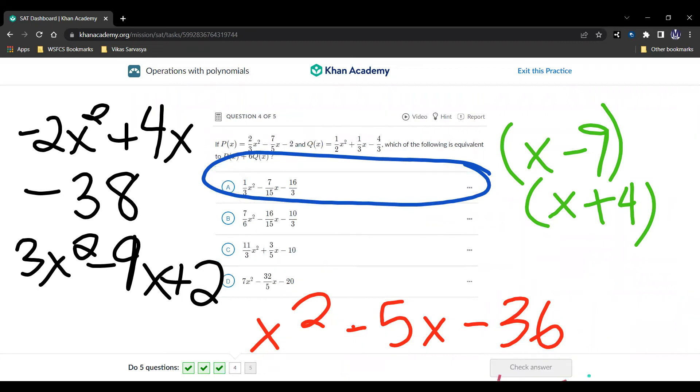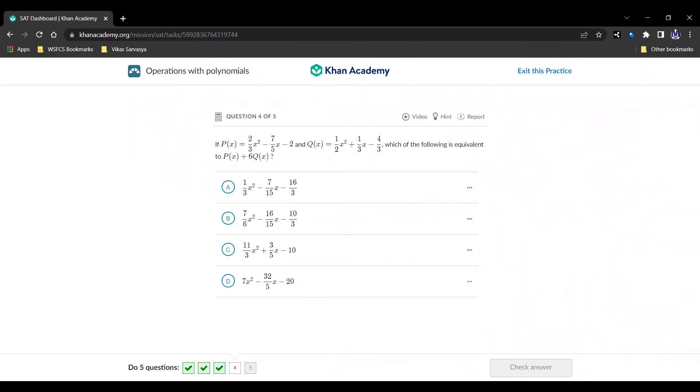Here it is. If p of x equals two-thirds x squared minus seven-fifths x minus 2, and q of x equals one-half x squared plus one-third x minus four-thirds, which is equivalent to p of x plus six q of x.